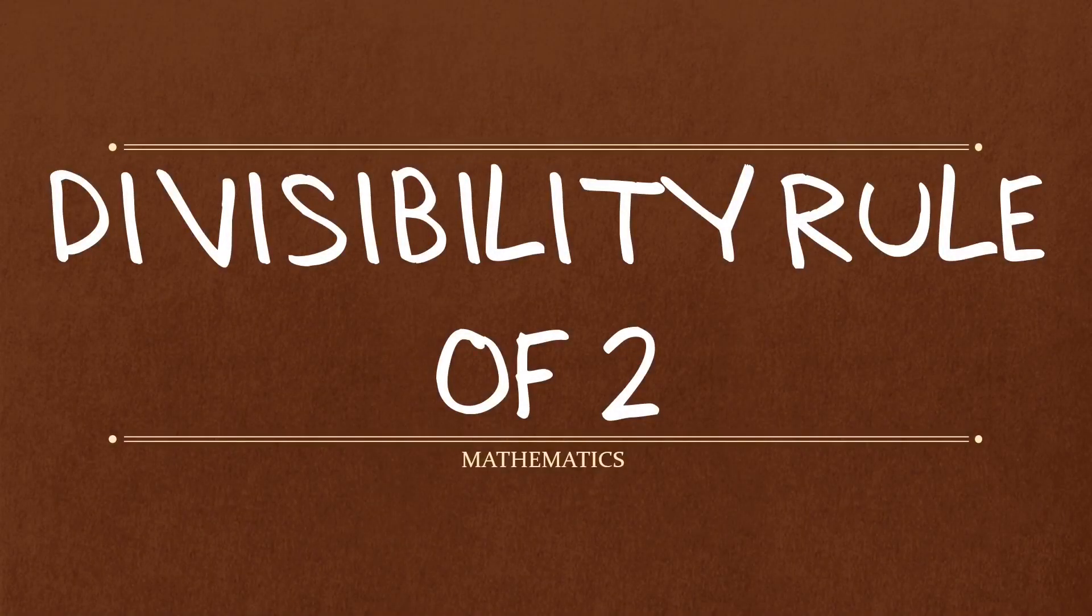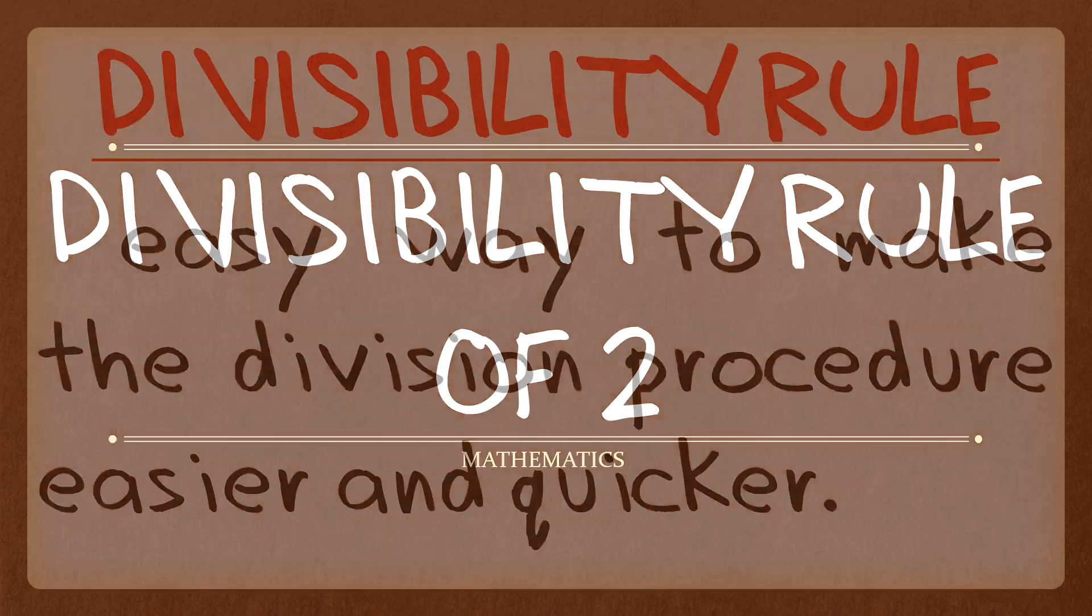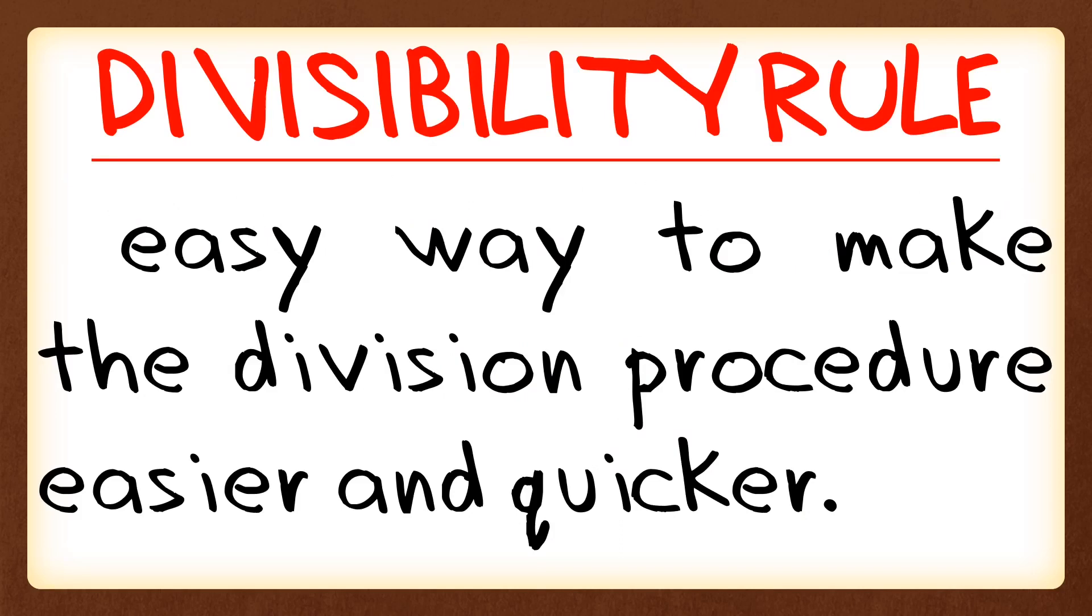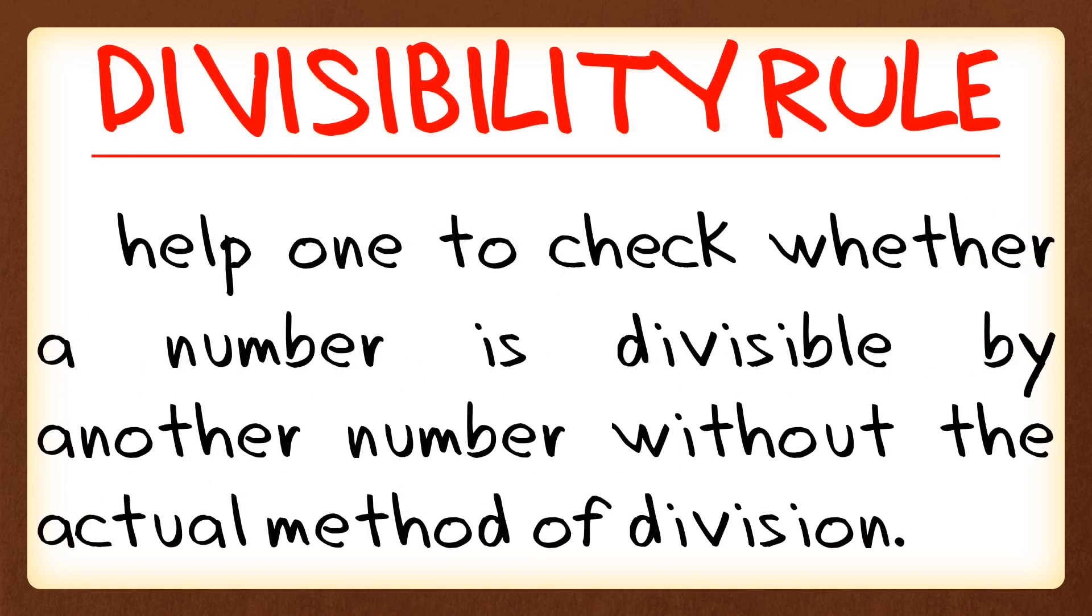In this video, we're going to learn about divisibility rule of 2. Divisibility rule is an easy way to make the division procedure easier and quicker, and it helps one to check whether a number is divisible by another number without the actual method of division.